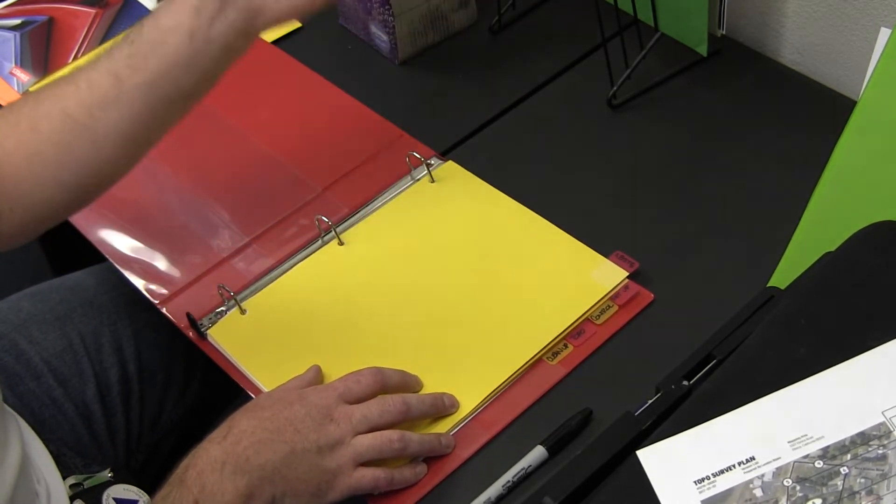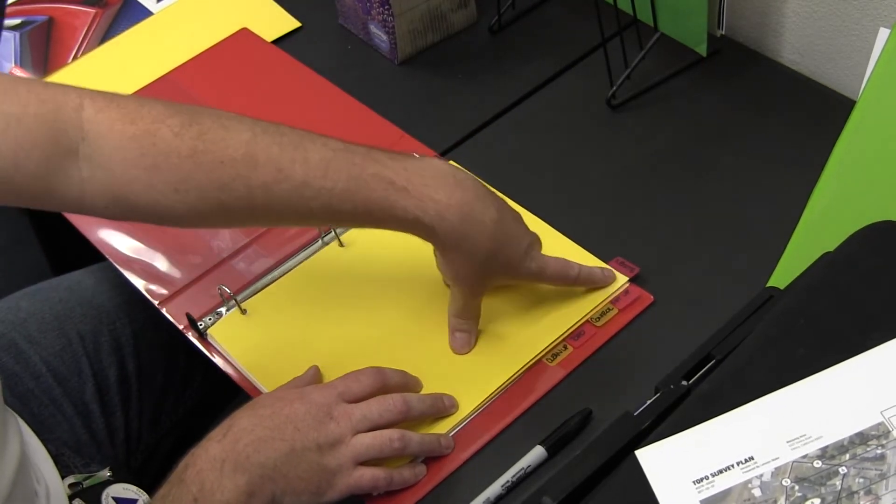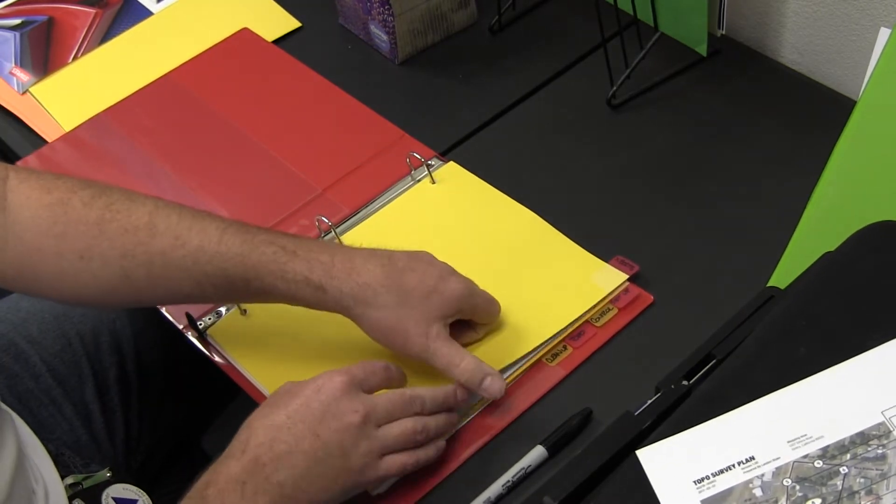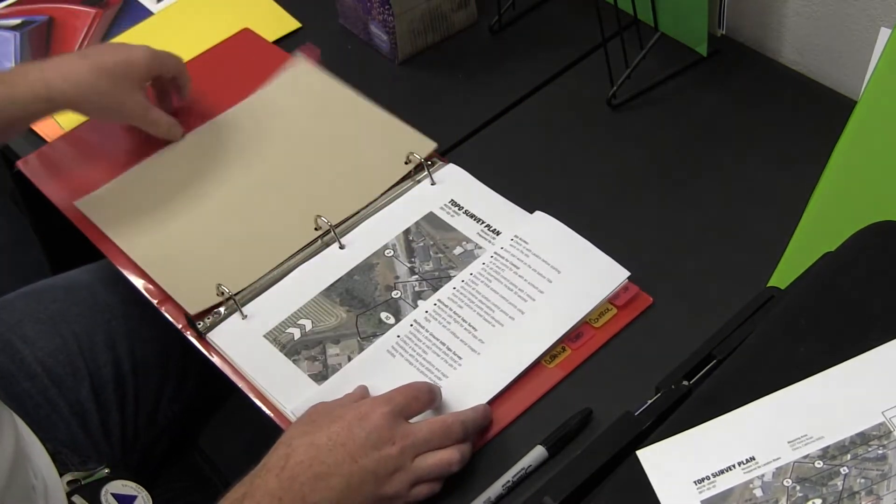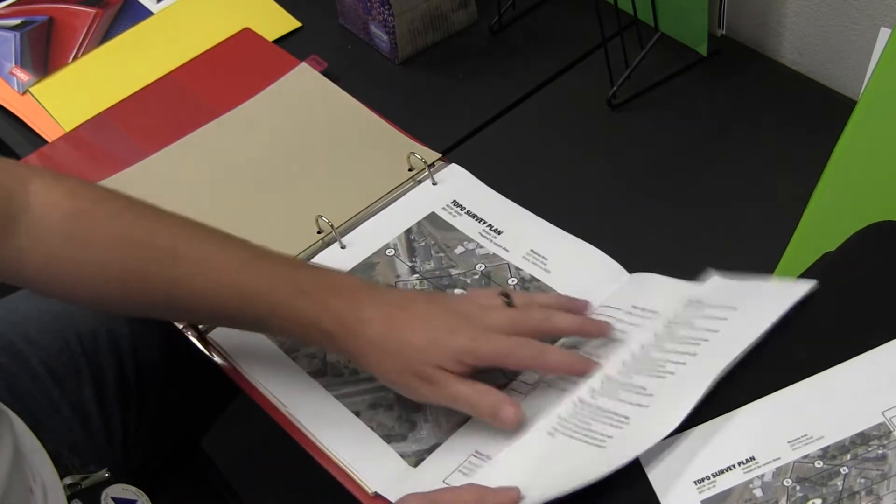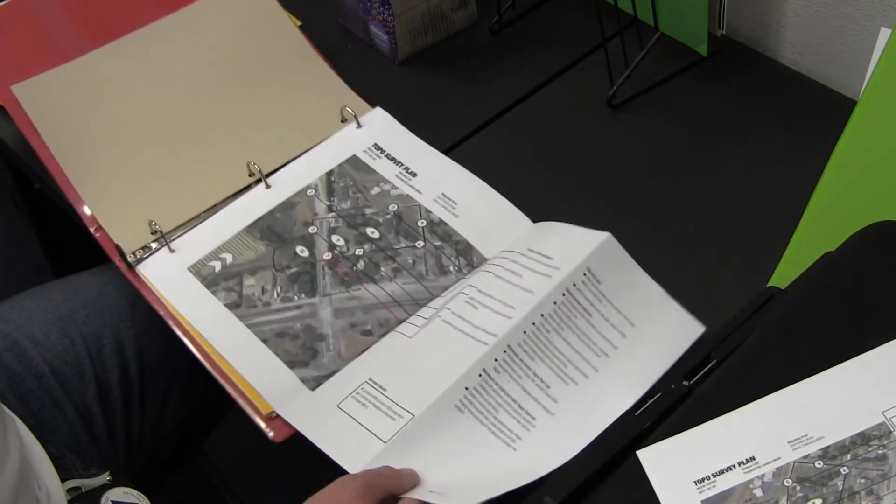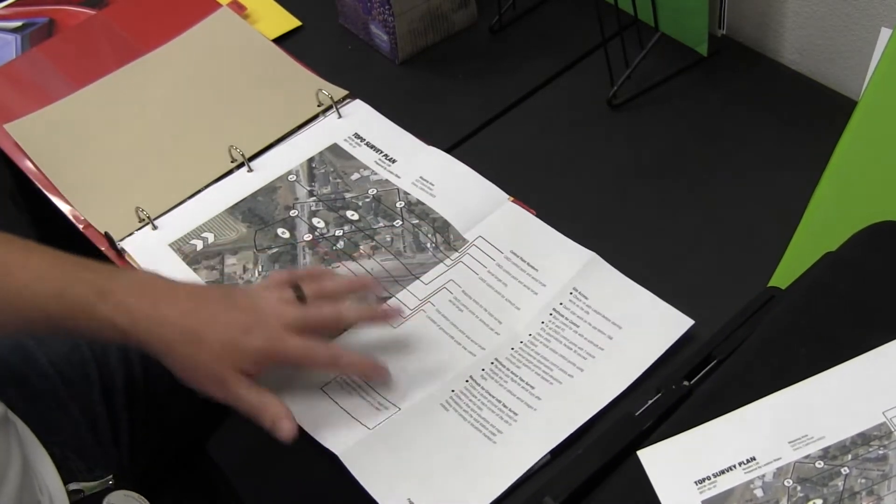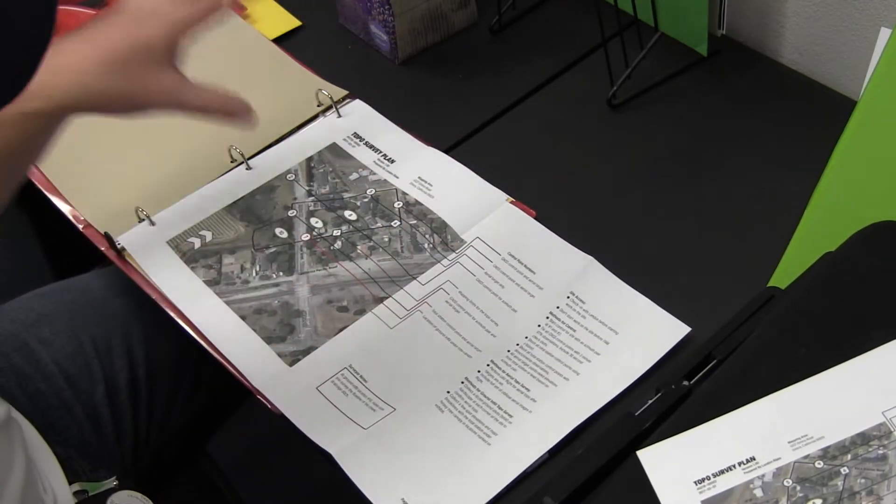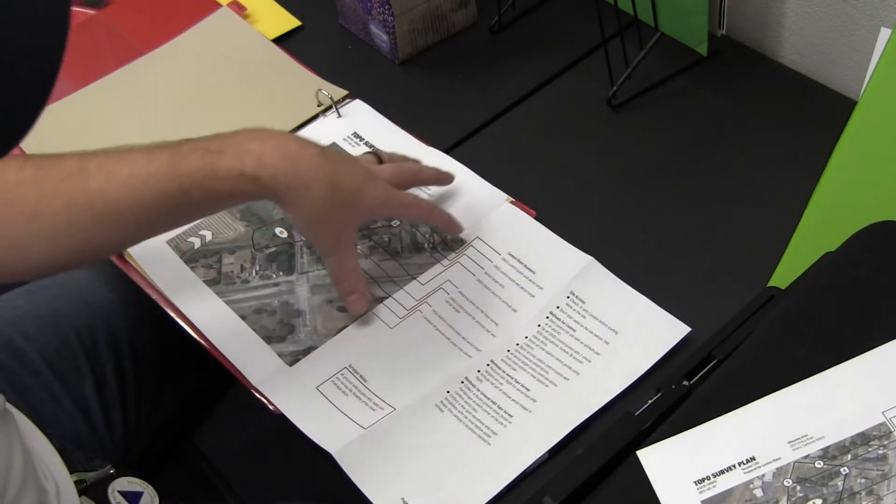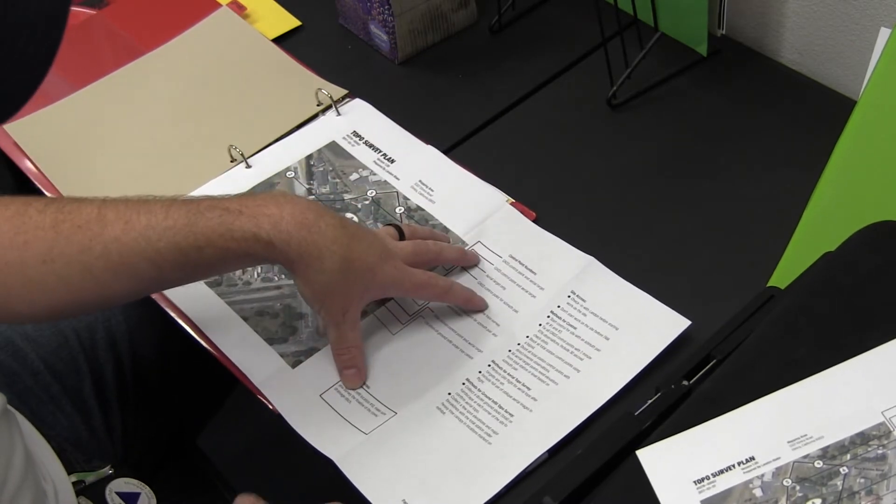Some of the tabs are common across jobs as well. Always, the very first tab is the exhibits tab, and when you open that, you'll have the exhibits for the job. In this case, we have the topo survey plan that we prepared before.